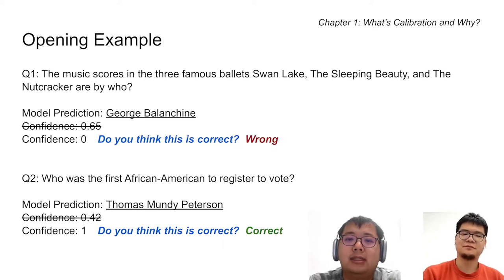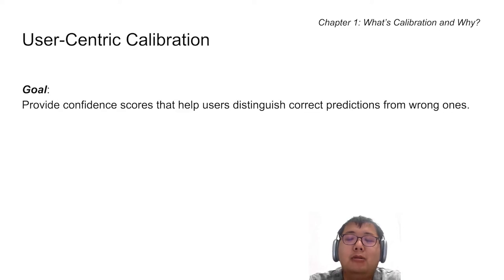Yeah, that's indeed correct. We devoted our paper to study how to adjust the confidence scores in order to help users differentiate the correct answers from the wrong ones. We call this user-centric calibration.